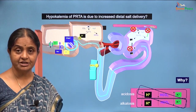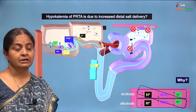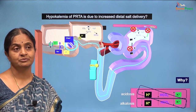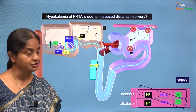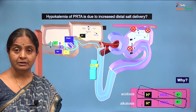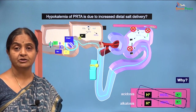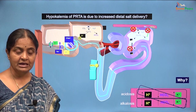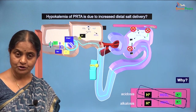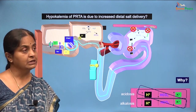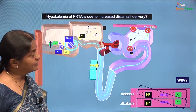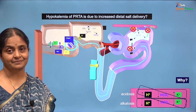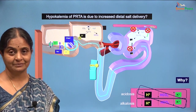It is still my conjecture that the cause of hypokalemia in proximal renal tubular acidosis could be due to the phenomenon of increased distal salt delivery. If I come across — or anyone comes across — evidence towards this, we will share it where possible.